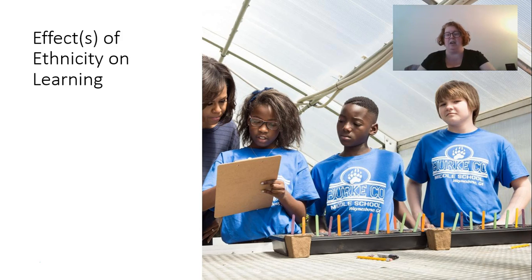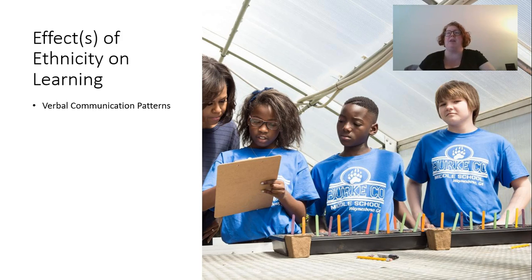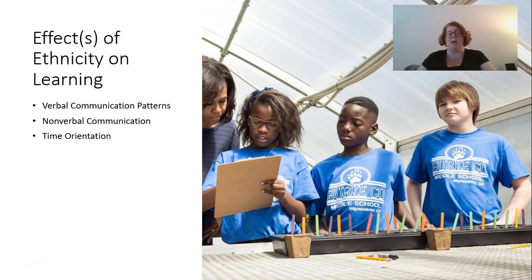Let's talk about the effects of ethnicity and race on learning. Different races and ethnicities and cultural backgrounds have different verbal communication patterns — how you tell a story, how loudly you speak, the words that you use are all different, and that might affect learning. Nonverbal communication also varies — things like eye contact, how much you use your hands, how close you stand to someone all vary by ethnicity. Our time orientation differs too: American culture strongly values being on time, to the point of leaving a conversation to meet a new commitment, whereas in other cultures you'd stay in the current conversation because what's important is the immediate interaction, not a future date.